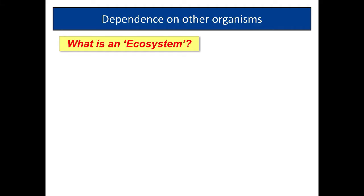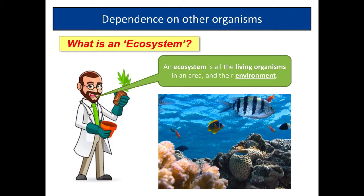Let's think first: what do we mean by the term ecosystem? An ecosystem by definition is all the living organisms in an area and their environment.